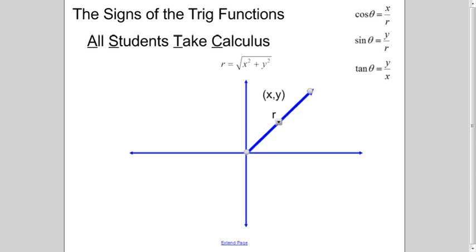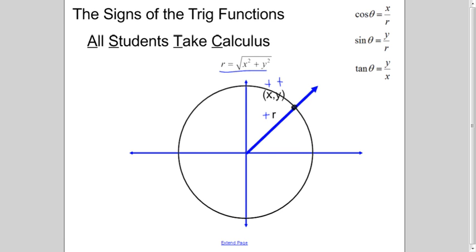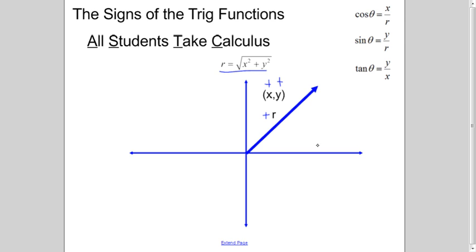Let me throw this angle into the first quadrant. It could be any angle in the first quadrant, not on the axis. We're just examining signs here, not actual numeric values. We know that x in the first quadrant is positive, and so is y. R is always positive because it is the radius of a circle — there's a point on the terminal side of the angle, and r is that distance, the radius of that circle.